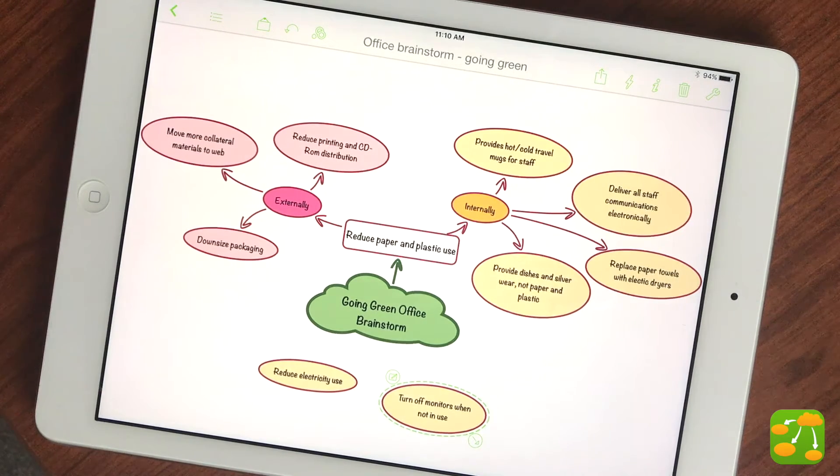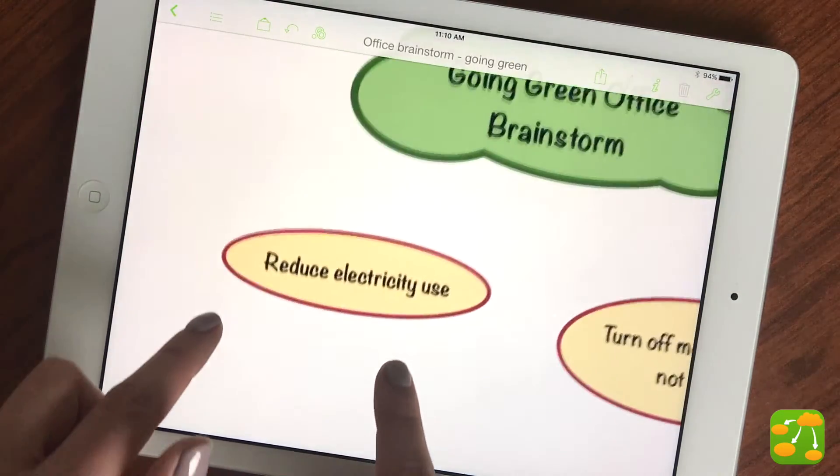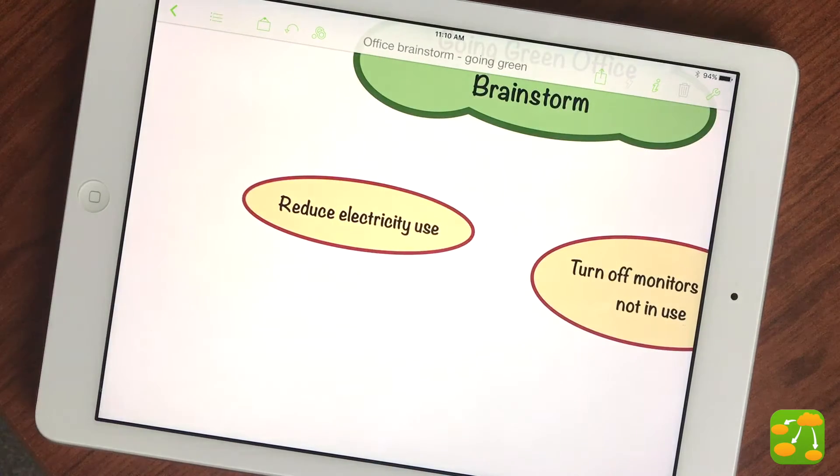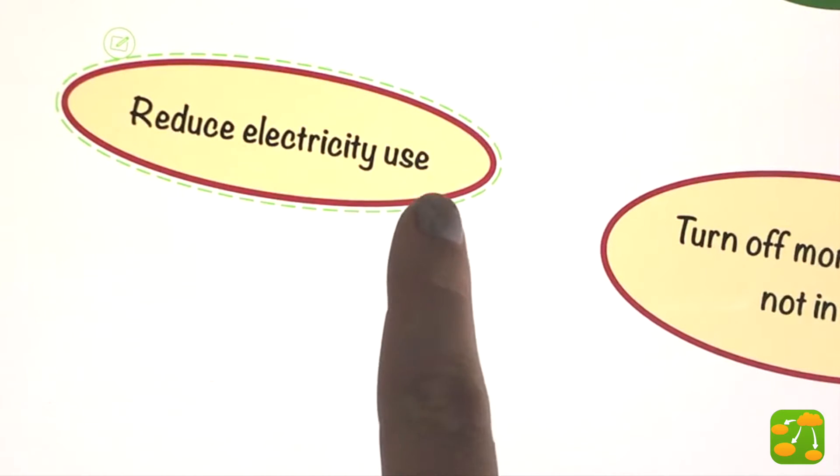Other times, you may have a thought or idea to capture that you already know is directly related to a main idea. To create a sub-symbol off of an existing idea symbol, select the parent symbol and tap or drag the arrow handle to create a connected symbol.